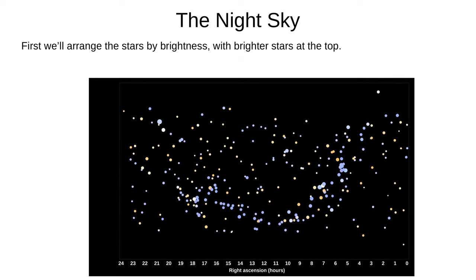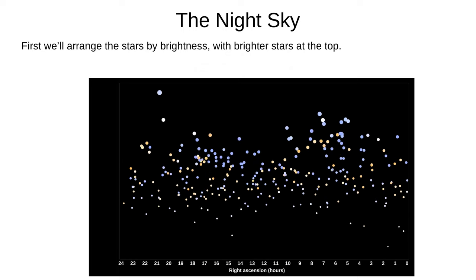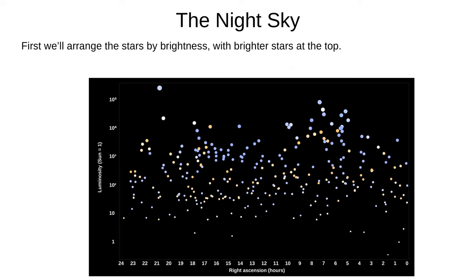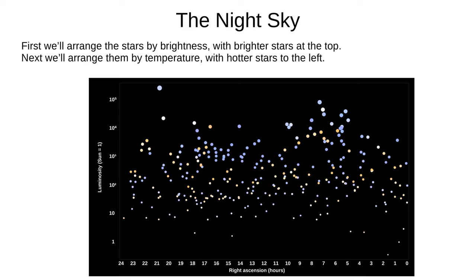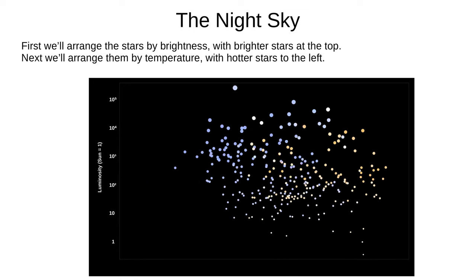First we'll arrange the stars by brightness, with brighter stars at the top. The y-axis here is luminosity — the power of the star, the amount of electromagnetic energy released per second as a multiple of our Sun's power. Next we'll arrange them by temperature, with hotter stars going to the left.